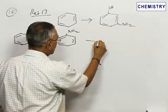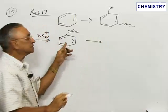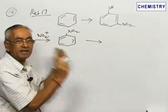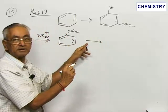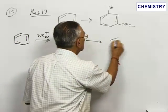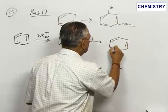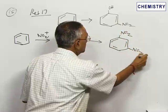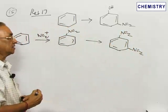Nitrobenzene can be further nitrated. Once the NO2 group is introduced, the ring becomes deactivated. However, under very strong conditions, you can still succeed in the nitration, giving rise to meta-dinitrobenzene. Thus, two nitro groups are introduced in the benzene ring.